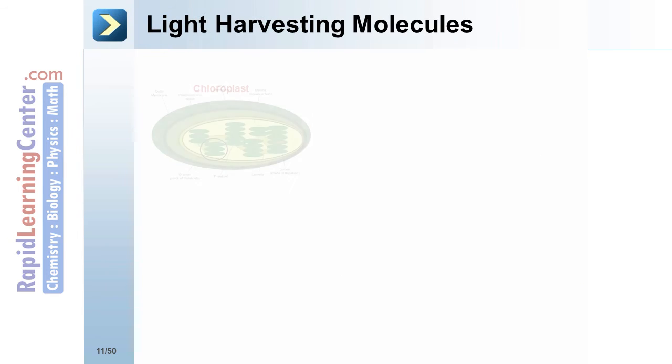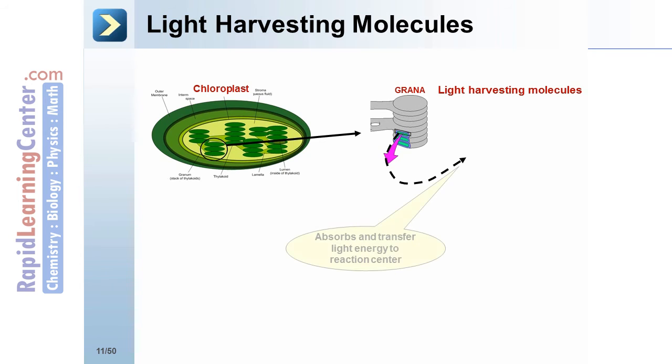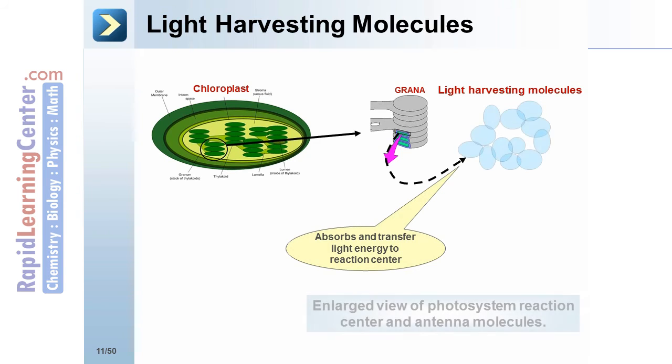Light harvesting molecules. This is the chloroplast. Let's look at its reaction center in a little more detail. The grana enclose the light harvesting molecules, which absorb and transfer light energy to the reaction center. This is the exploded view of the photosystem reaction center and the antenna molecules. An electron is absorbed and the energy transferred to the reaction center.